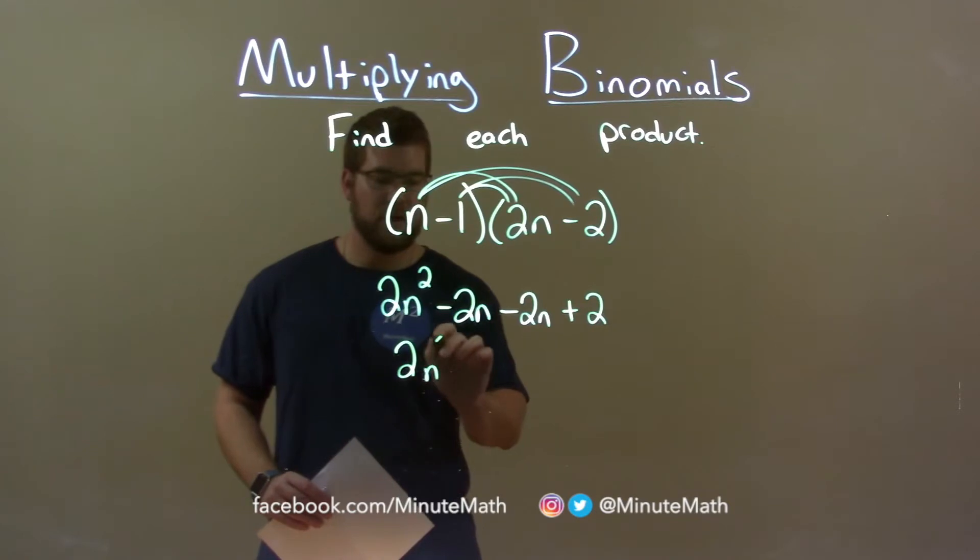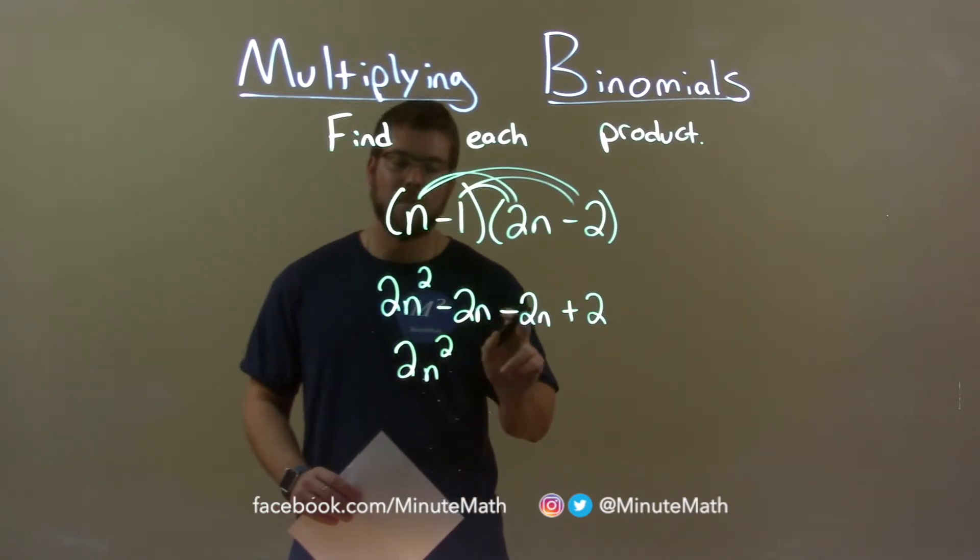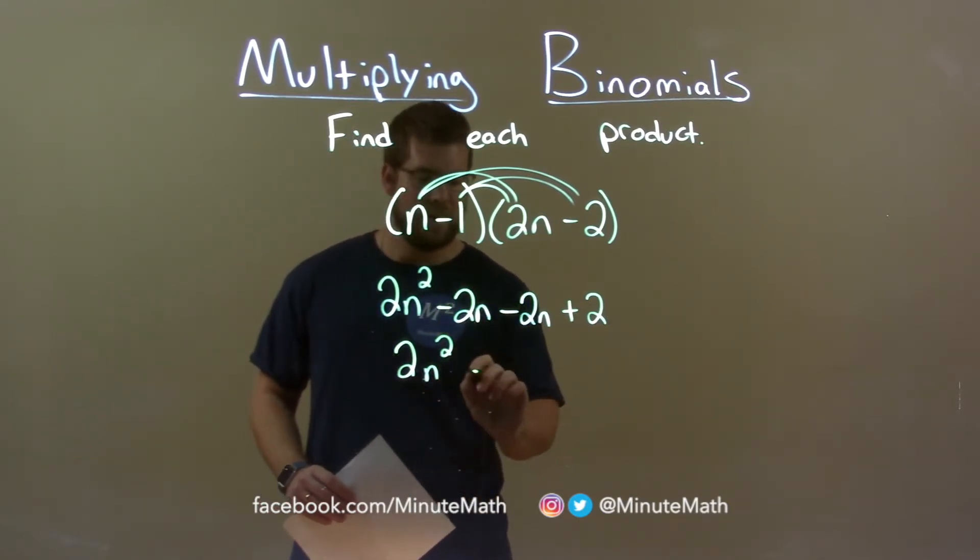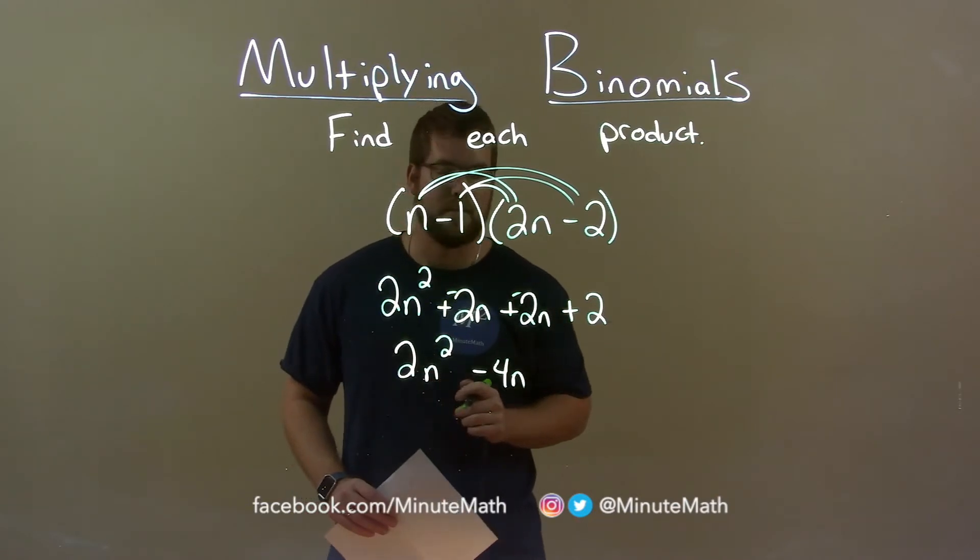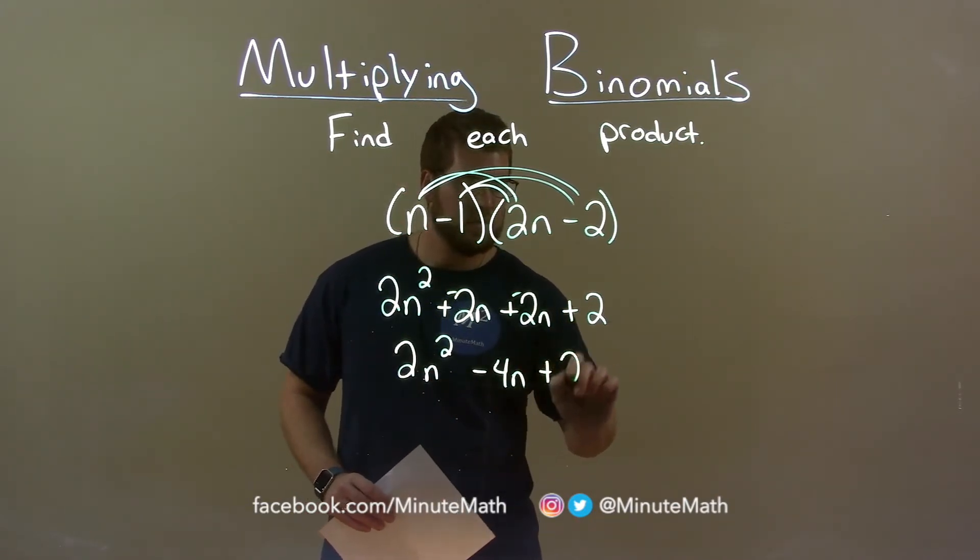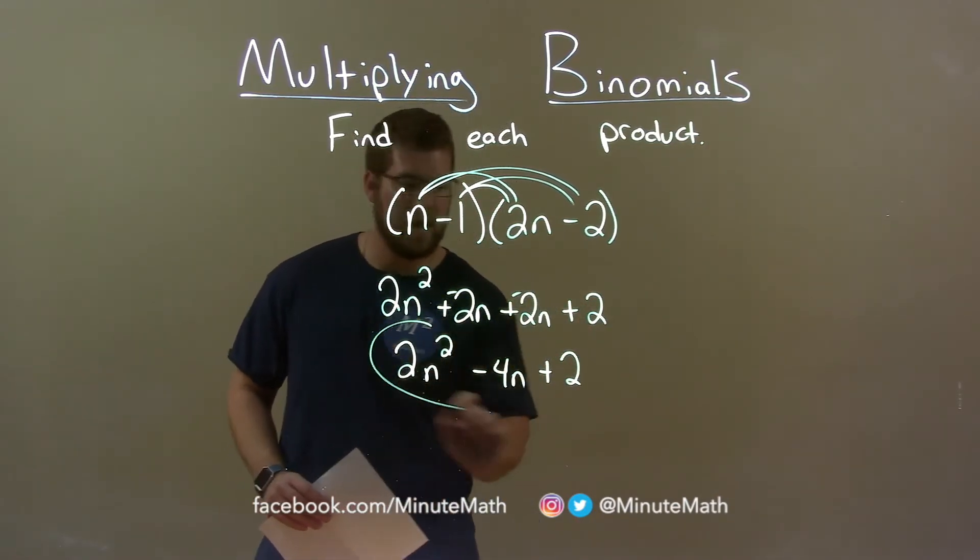2n squared comes down. A minus 2n minus 2n, be careful, is minus 4n. You can almost see it like this, plus a negative, plus a negative. They mean the same thing. Then we add another 2 or bring that 2 down and there we have our final answer.